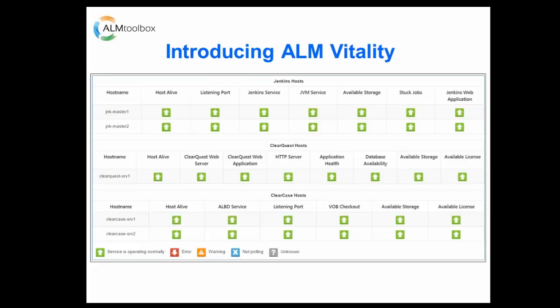This is the ALM Vitality dashboard. The dashboard shows a representation of all the servers monitored by ALM Vitality. Each row represents a monitored server — it can be ClearCase, ClearQuest, and of course Jenkins. Each column represents a monitoring test, and each cell shows the status of the test for a specific server. The tests are tailored for each server type — both application and IT testing — and can be customized to the user's environment. For example, you can define storage thresholds and get warning and error notifications as soon as your host runs out of space.